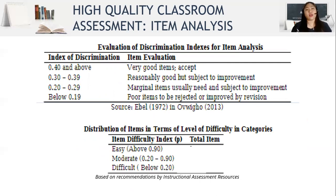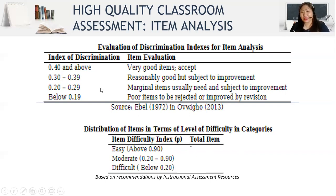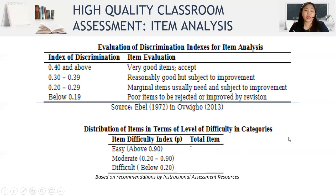In the index of discrimination: if we get 0.40 and above, the item is very good and we retain it. If we get 0.30 to 0.39, the item is reasonably good but may be subject to improvement. If we get 0.20 to 0.29, it is a marginal item and may need improvement. And if it is below 0.19, it is a poor item which may be rejected or improved by revision.